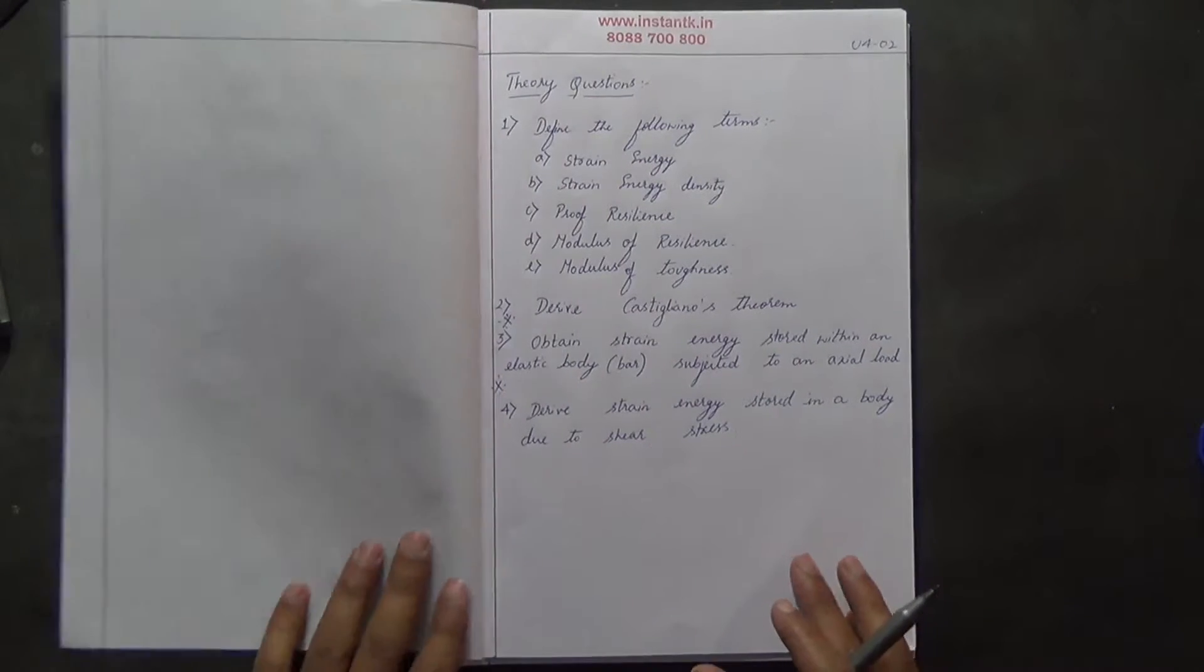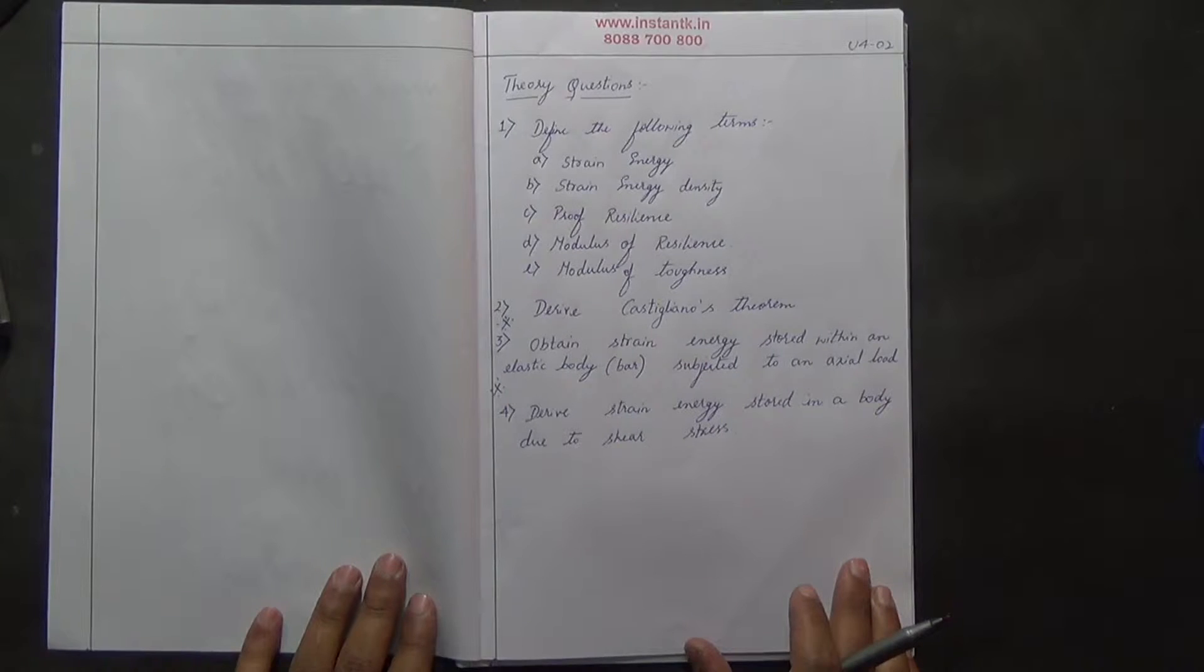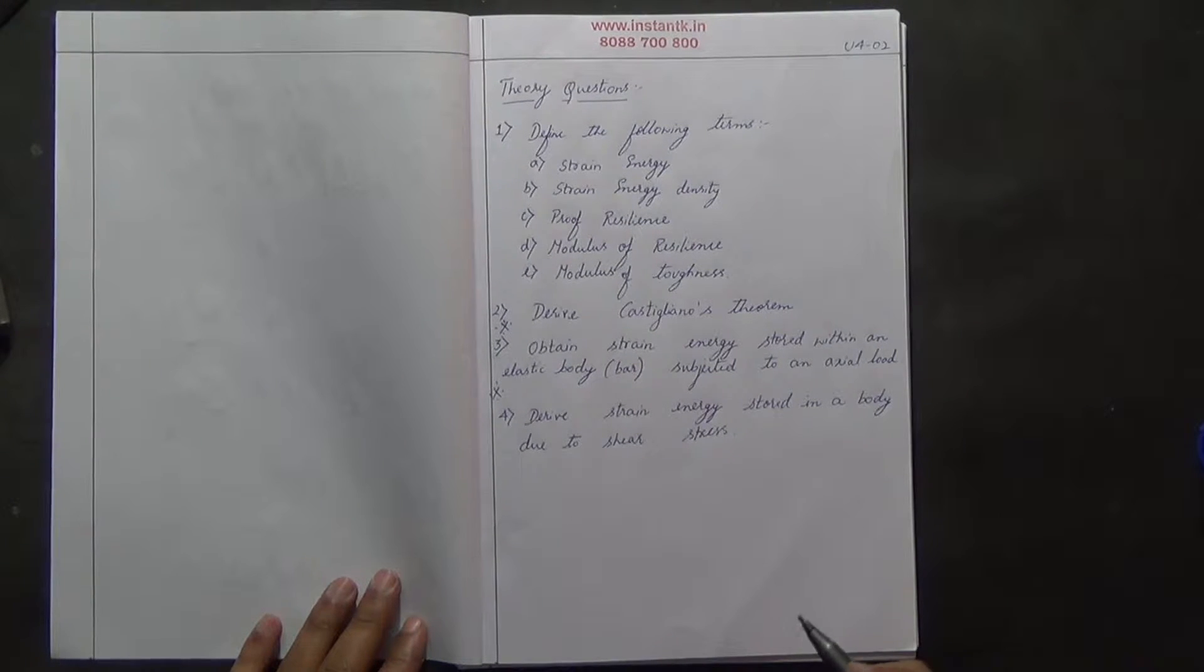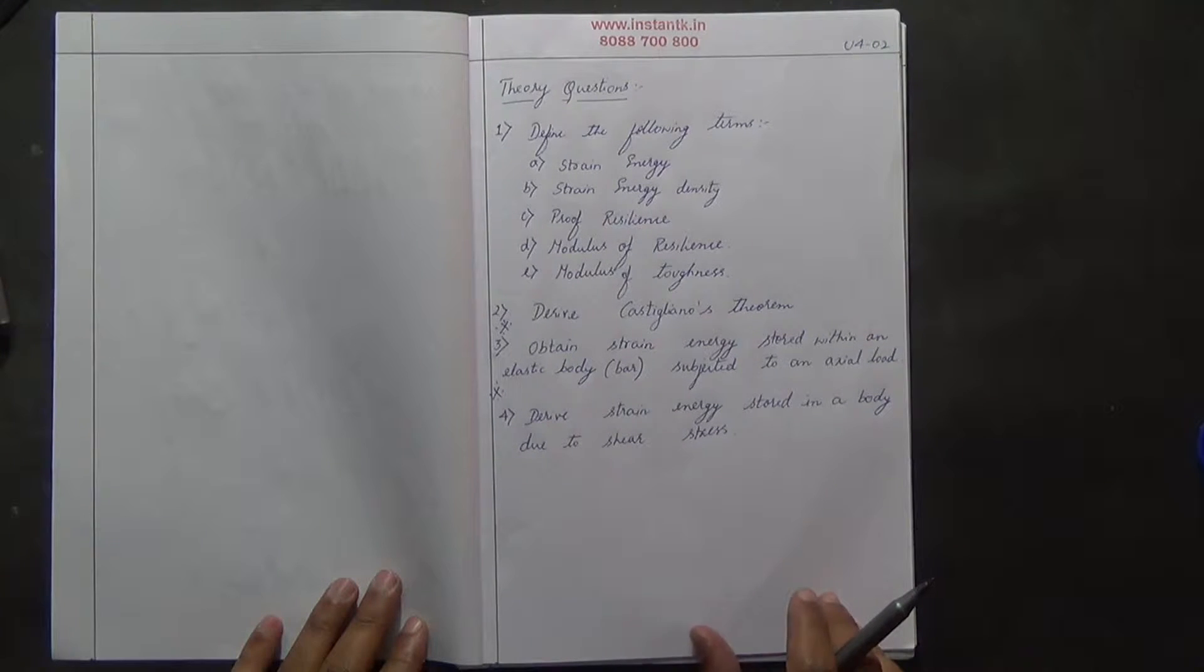The worksheet consists of theory questions which are asked in viva examinations. In energy methods, you can expect definitions, derivations of Castigliano's theorem, strain energy stored within an elastic body subjected to axial load, and strain energy stored in a body due to shear stress.